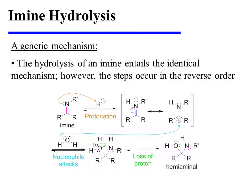Imine hydrolysis involves the exact same mechanistic steps; they simply occur in the reverse order. So if an imine is treated with catalytic acid and excess water, we can drive the reaction toward the original carbonyl-containing substrate. This occurs by the initial protonation of the imine nitrogen. The resonance-stabilized cation that forms is then attacked by a molecule of water, and the oxonium ion that forms loses a proton to generate the hemi-aminal, the mechanistic intermediate midway between the carbonyl-containing compound and the imine.